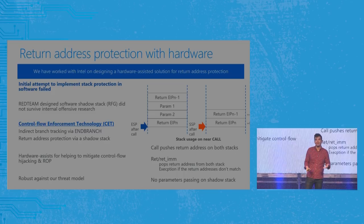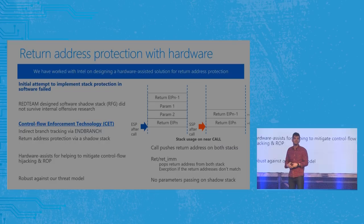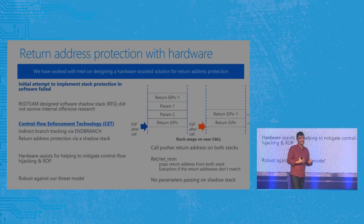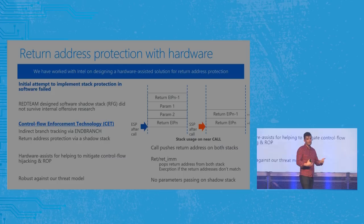One advantage of working with Intel here: implementing this in software required expensive prologues and epilogues for checking. Working with Intel, they can implement this in microcode or architecturally with very little performance hit, and can segment the hardware shadow stack so attackers can't corrupt it. We get a very robust gap-filler for rearward control flow integrity, and that's pretty great.